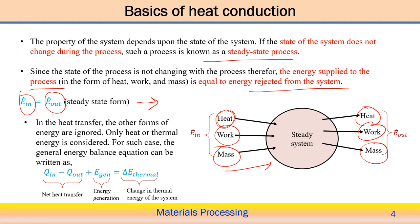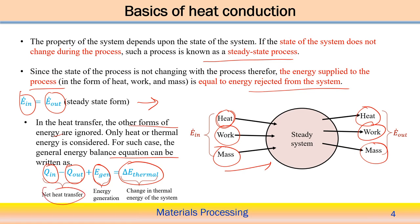In heat transfer, other forms of energy are ignored and only thermal or heat energy is considered. The general energy balance equation is: Q_in minus Q_out plus Ė_gen equals the change in thermal energy of the system (ΔE_thermal). There may be a possibility of heat generation within the system, so we modify the net heat transfer by including the energy generation term, which is equivalent to the change in thermal energy of the system.